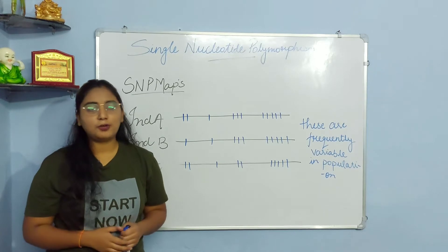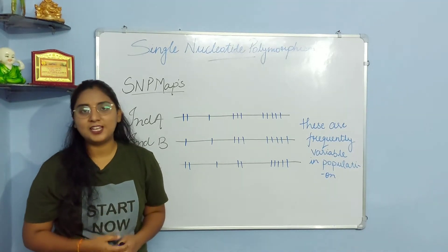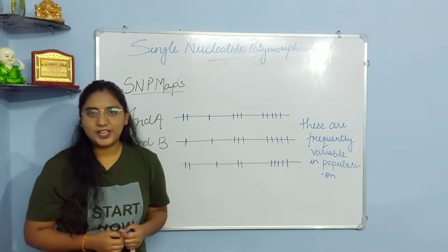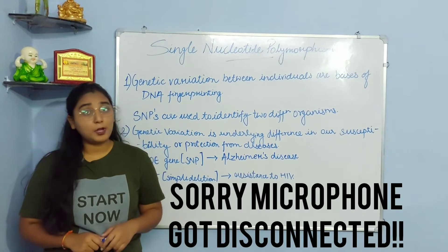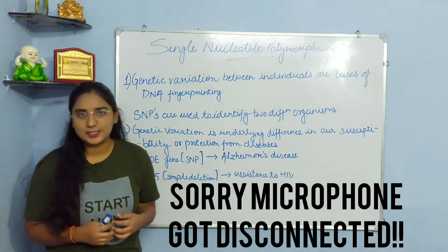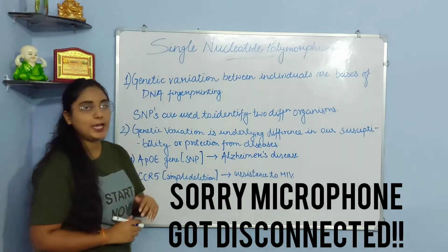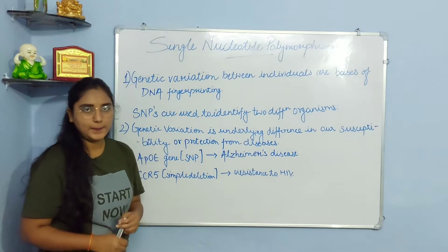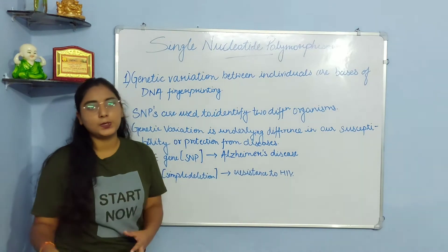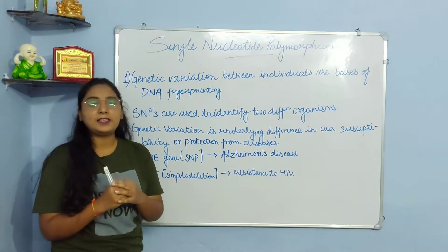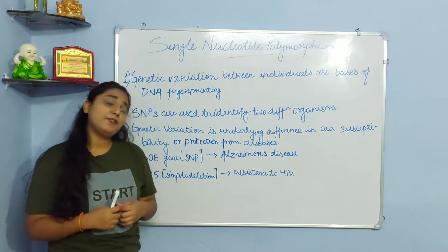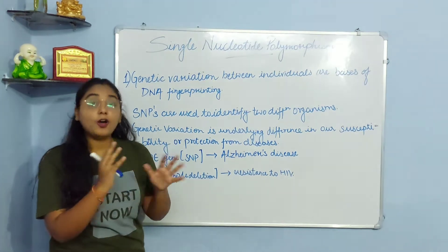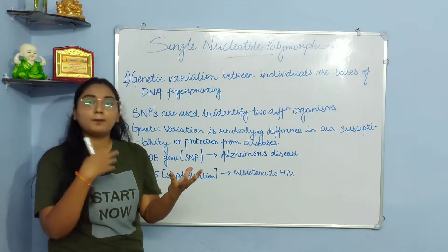That is why Single Nucleotide Polymorphism mapping ko scientists ne propose kiya, and it has helped a lot in medical science and different fields in life science. We are applying SNP in different fields. The first application is that genetic variation between individuals is the basis of DNA fingerprinting — the variation among individuals is the base for DNA fingerprinting.